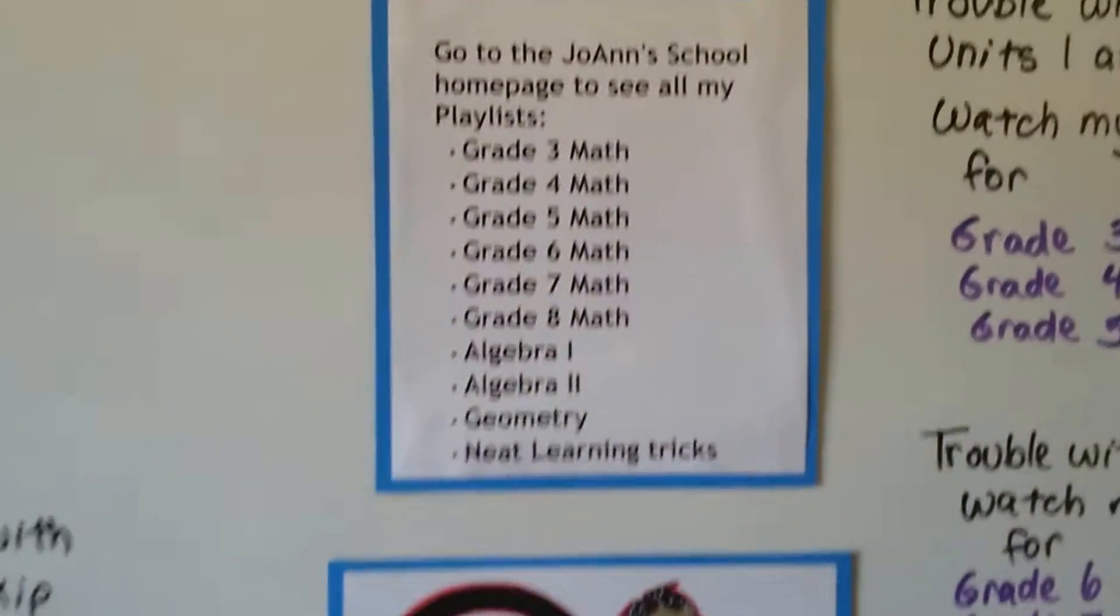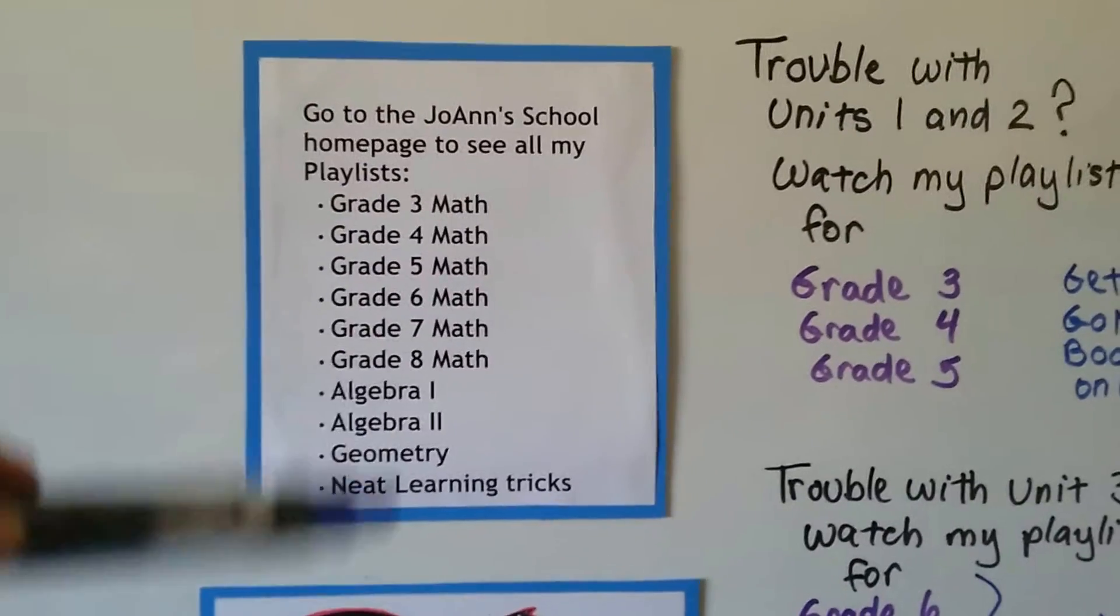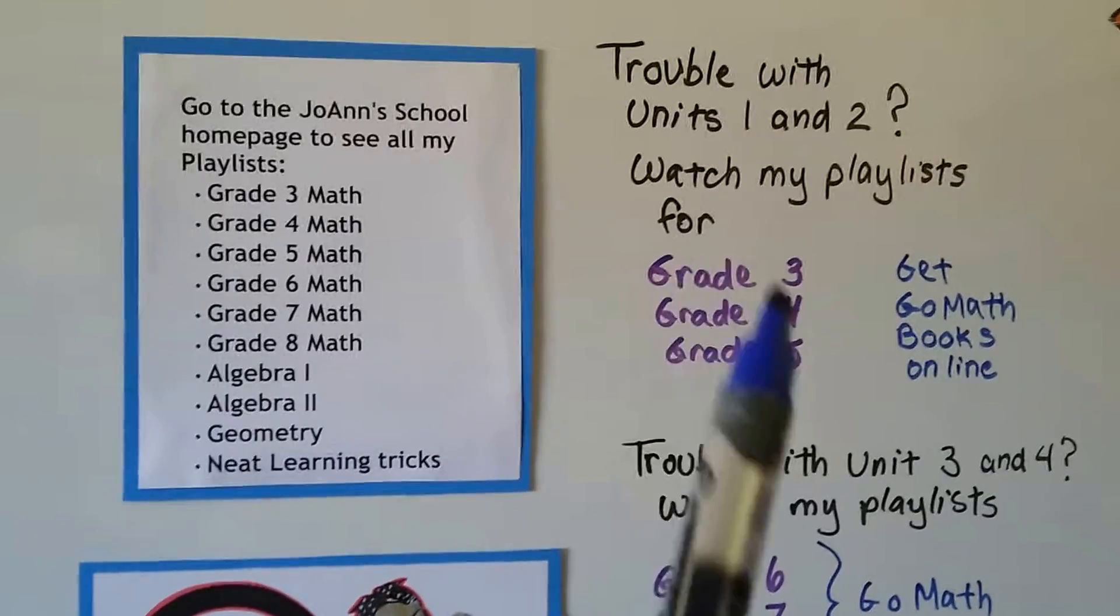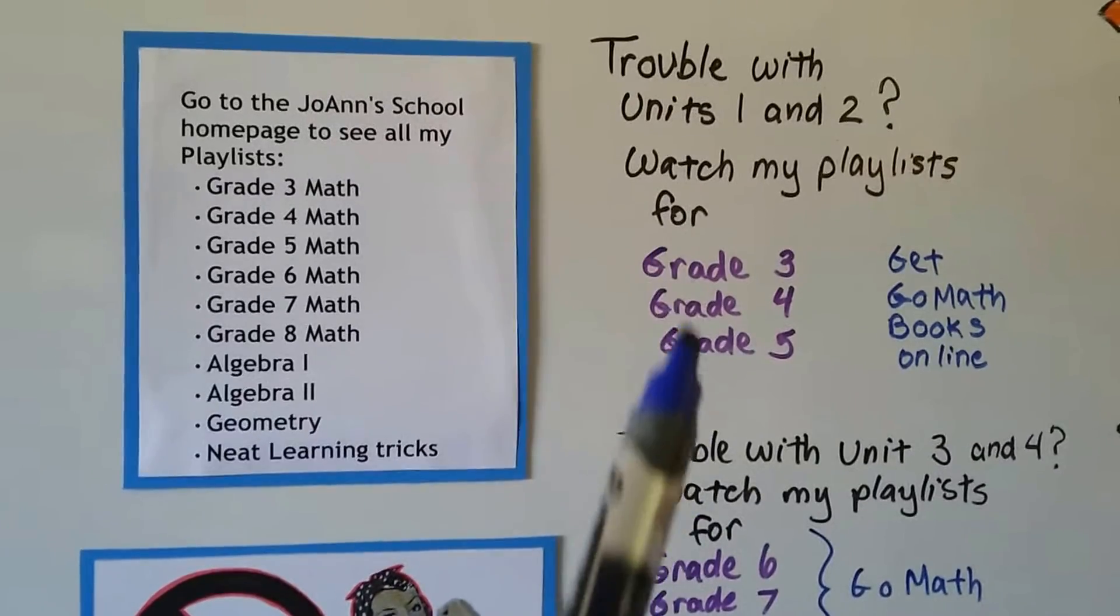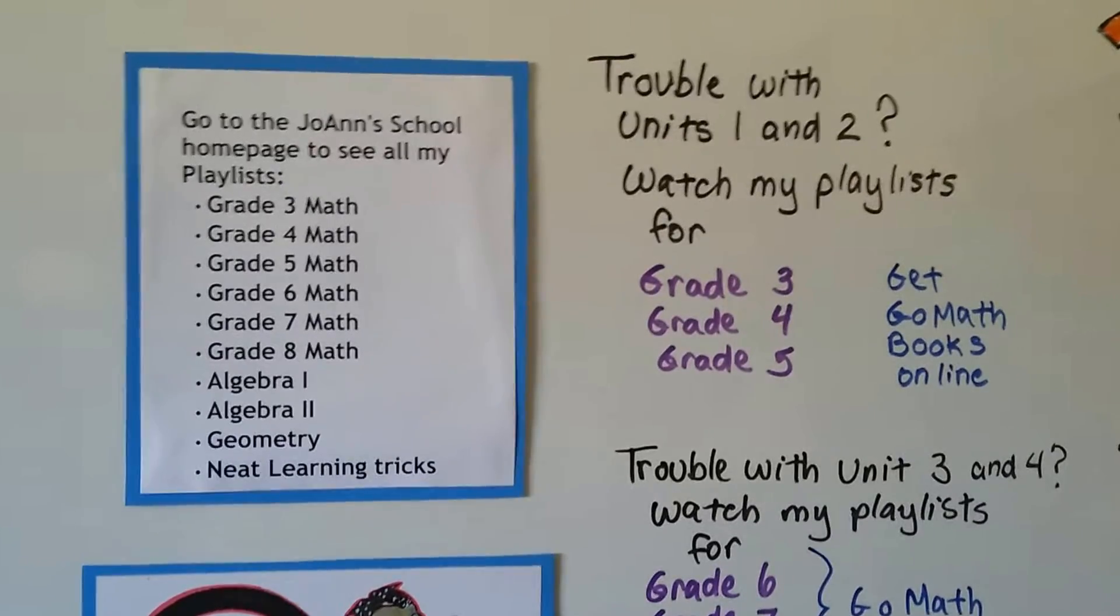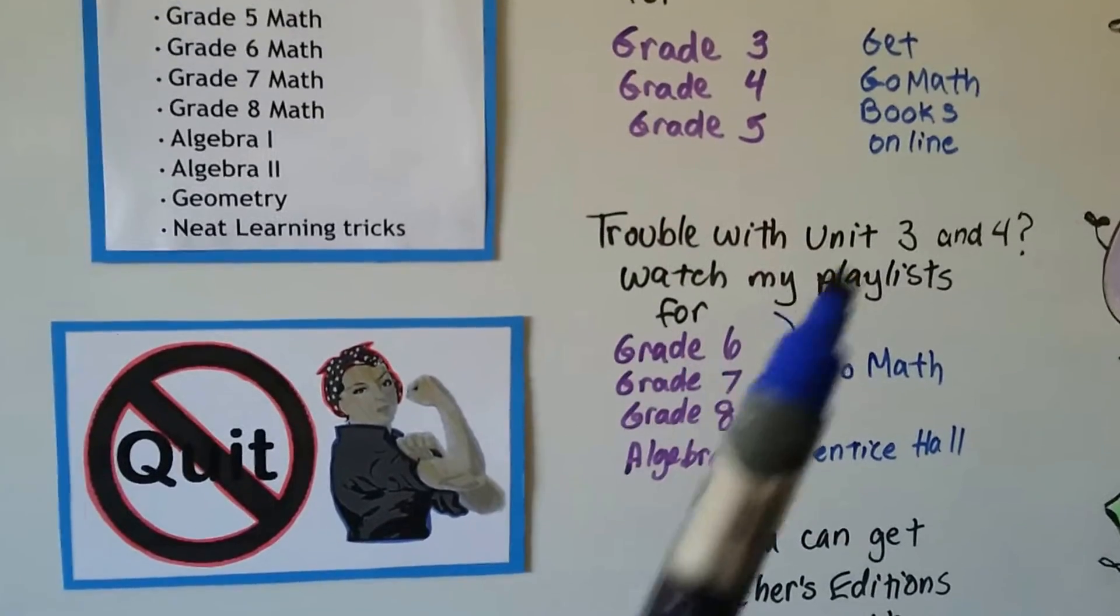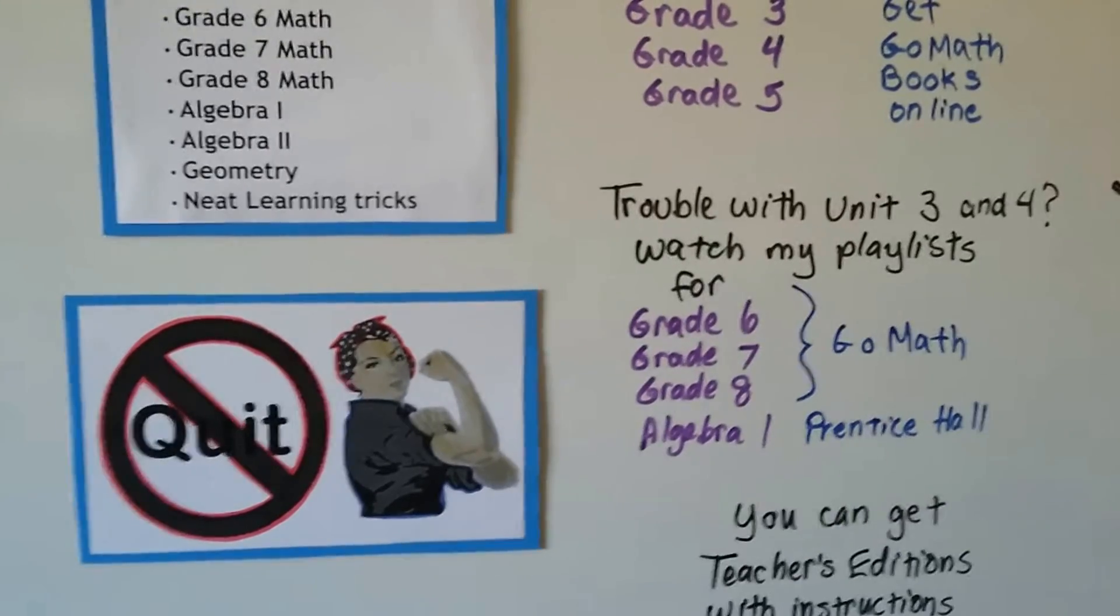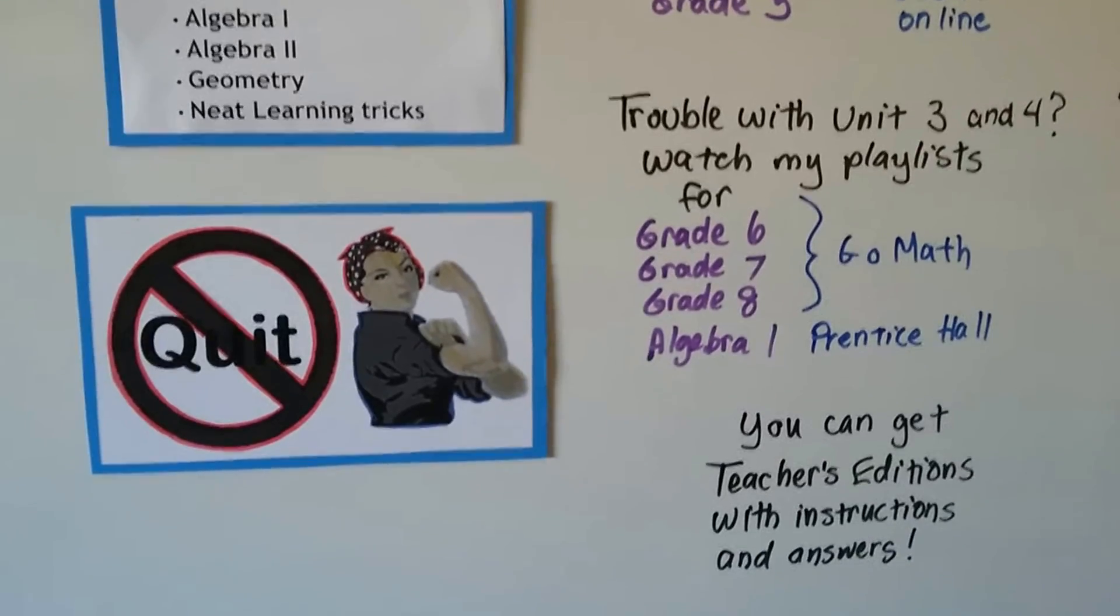Now, my home page has many, many more playlists than this. But these are the ones that will help you. And if you had trouble with units 1 and 2, then you're going to need to watch the playlists for grade 3, 4, and 5. These are entire school years in playlists. You can get the GoMath books online. I know they're available on Amazon. And they're paperback. They're great. And if you had trouble with unit 3 and 4 with algebra and geometry, you can watch the grade 6, 7, and 8 playlists. You can even get the GoMath books that go with those. And Algebra 1, I used Prentice Hall. I used an older copyright because it was cheaper. You can get the teacher's editions with instructions and answers.